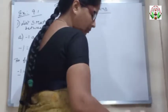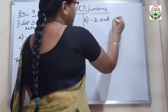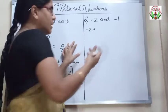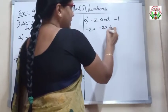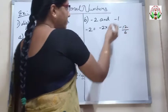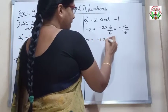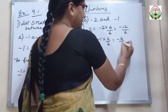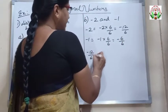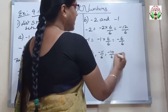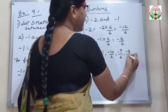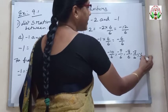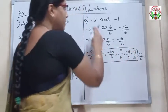Next, part B: finding 5 Rational Numbers between minus 2 and minus 1. For minus 2, I multiply it as minus 2 into 6 by 6, giving minus 12 by 6. For minus 1, multiplying by 6 by 6 gives minus 6 by 6. So the numbers are: minus 12 by 6, minus 11 by 6, minus 10 by 6, minus 9 by 6, minus 8 by 6, minus 7 by 6, and minus 6 by 6, which is minus 1.